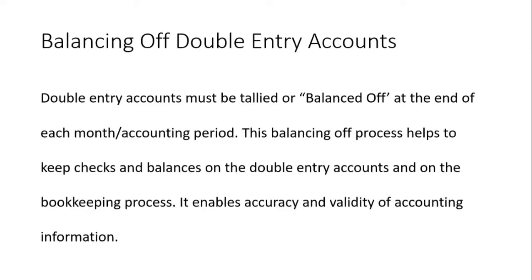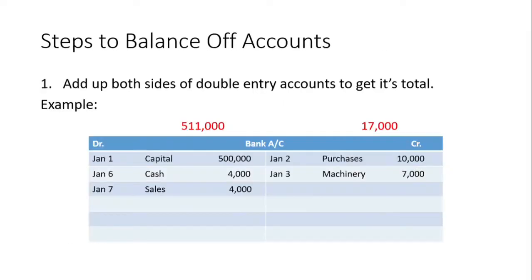Balancing off double entry accounts — as I was saying earlier, double entry accounts must be tallied or balanced off at the end of each month or accounting period. This balancing-off process helps to keep checks and balances on the double entry accounts and on the bookkeeping process. It enables accuracy and validity of accounting information. There are five steps in balancing off double entry accounts.